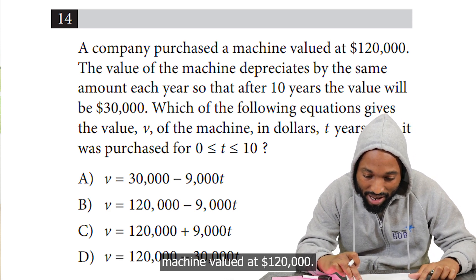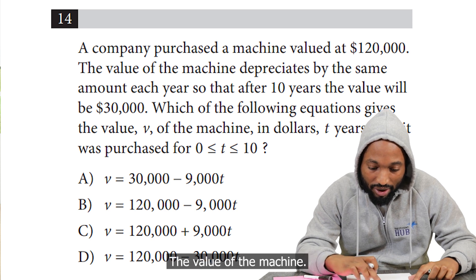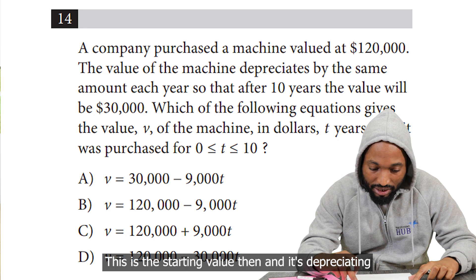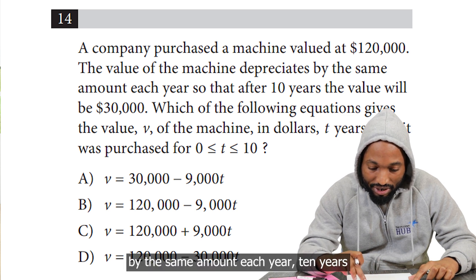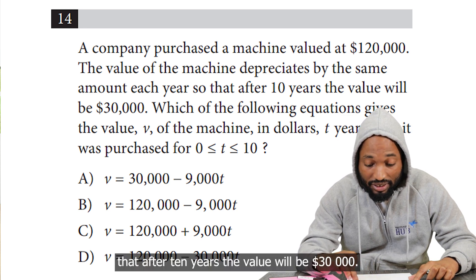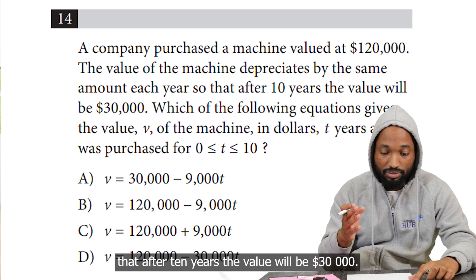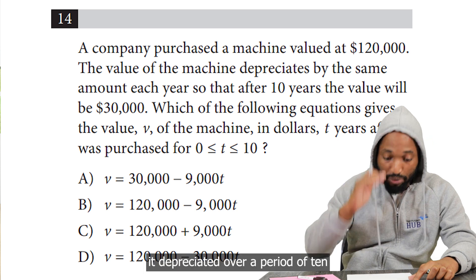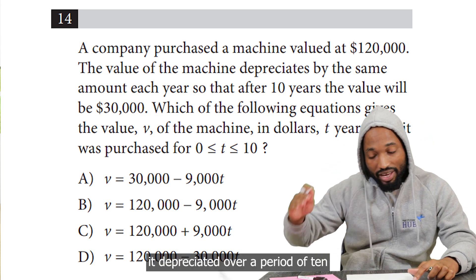Machine valued at $120,000. The value of the machine—this is the starting value then—and it's depreciating by the same amount each year. Ten years, after 10 years the value would be $30,000. So it's not depreciating $30,000 per year; it depreciated over a period of 10 years and arrived at $30,000.